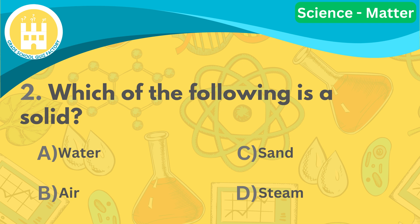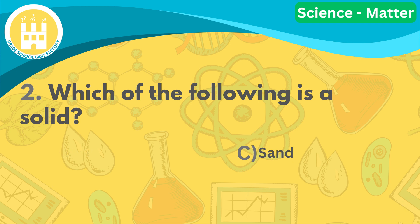Number two, which of the following is a solid? The correct answer is letter C, sand. Solids have a fixed shape and volume and they do not easily change their shape.